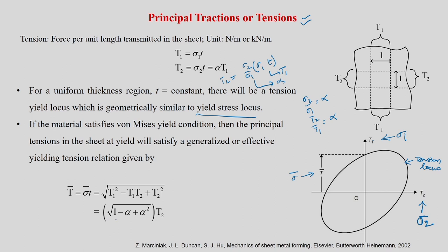You can directly write t_bar as the square root of (1 minus alpha plus alpha squared) times t_1. Sigma_bar was written as the square root of (1 minus alpha plus alpha squared) times sigma_1, so this becomes t_1. If you know t_bar you can get the yield locus. We are not going to use it directly; rather, we will use only the yield locus.